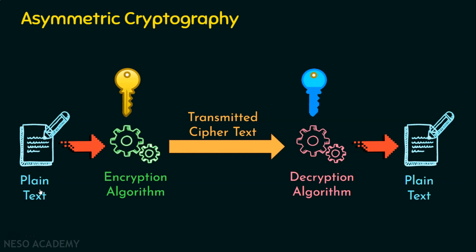The sender creates a plaintext message that only the receiver should understand, then passes it to the encryption algorithm. This encryption algorithm uses the receiver's public key — the yellow color key is the receiver's public key and the blue color key is the receiver's private key. The receiver's public key and the plaintext are given as input to the encryption algorithm, which generates the ciphertext. When the receiver receives the ciphertext, they use their private key to recover the plaintext. Since the plaintext was encrypted using the receiver's public key, it can only be decrypted with the receiver's private key.